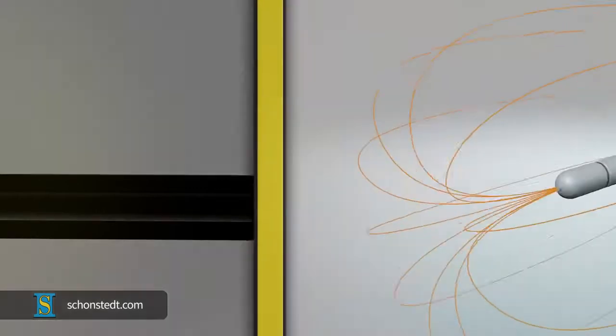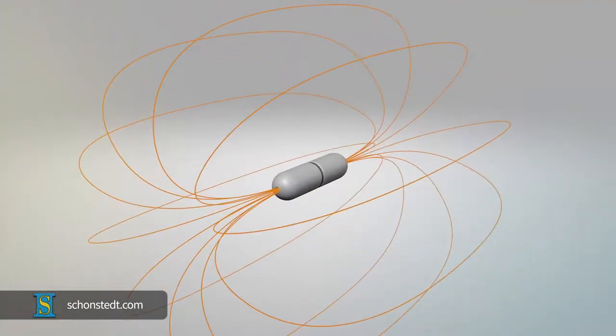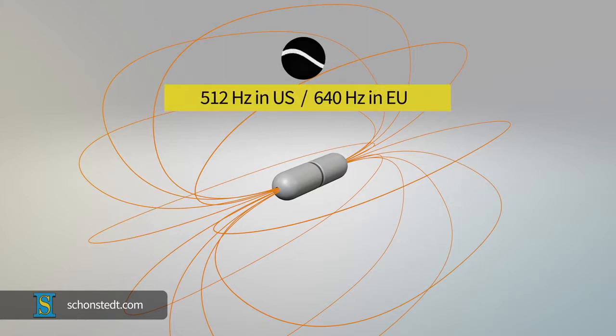Although sondes may come in various frequencies, there are two fairly standard operating frequencies that are commonly used and work for most applications. Those frequencies are 512 Hz in the US and 640 Hz in the EU.